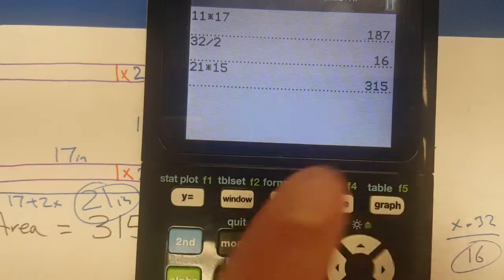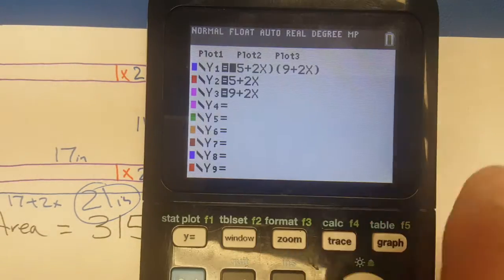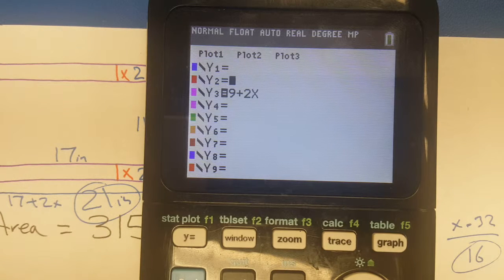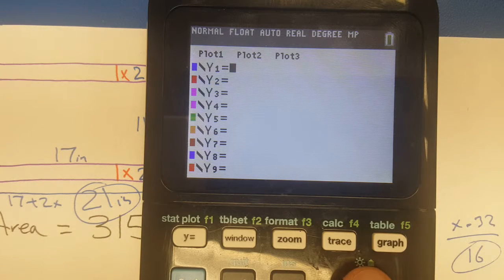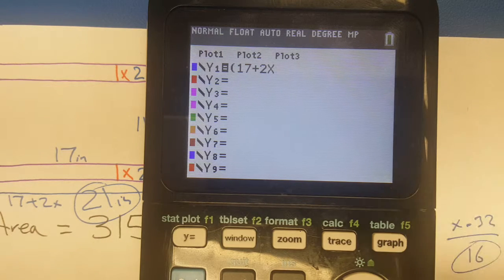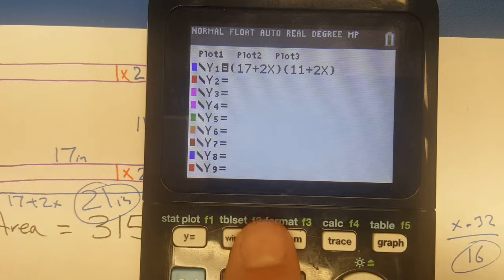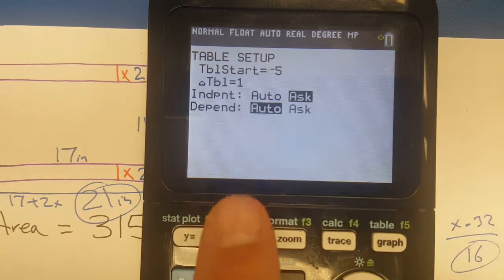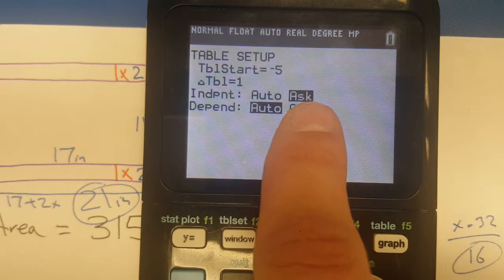What do you do? You go to y equals. I have a different problem in there, so let me get that out. So what's going to happen: I go 17, I need a bracket, 17 plus 2x, close the bracket, new bracket, 11 plus 2x.